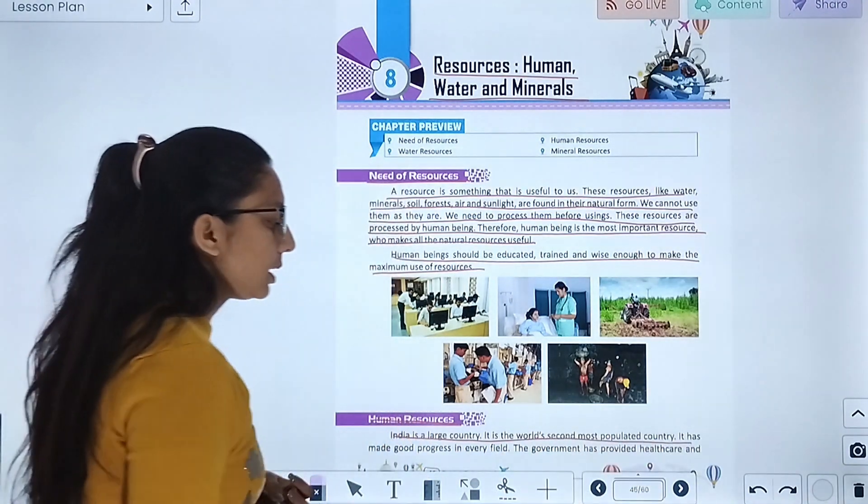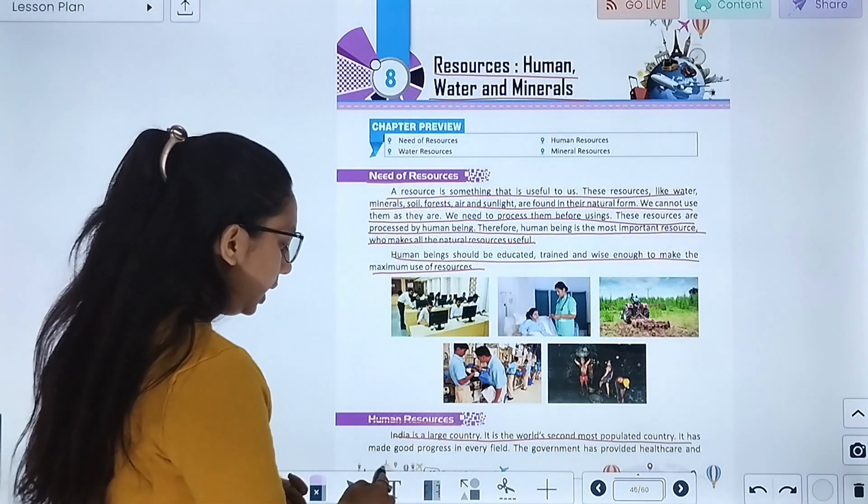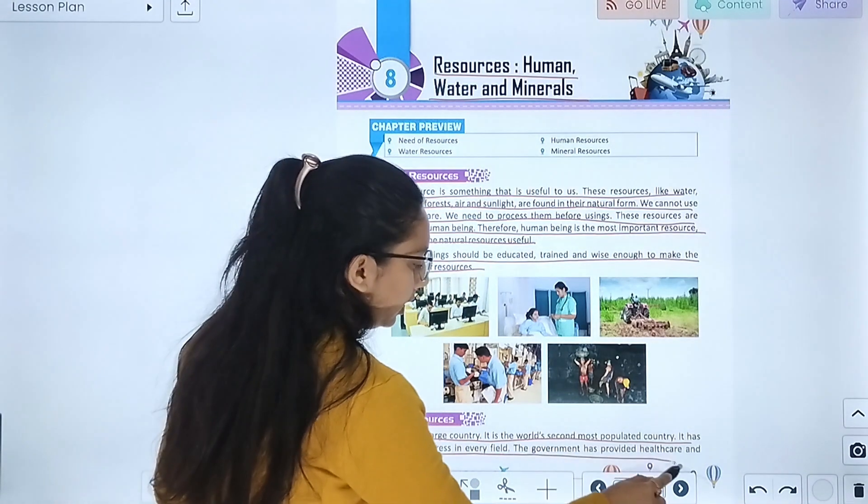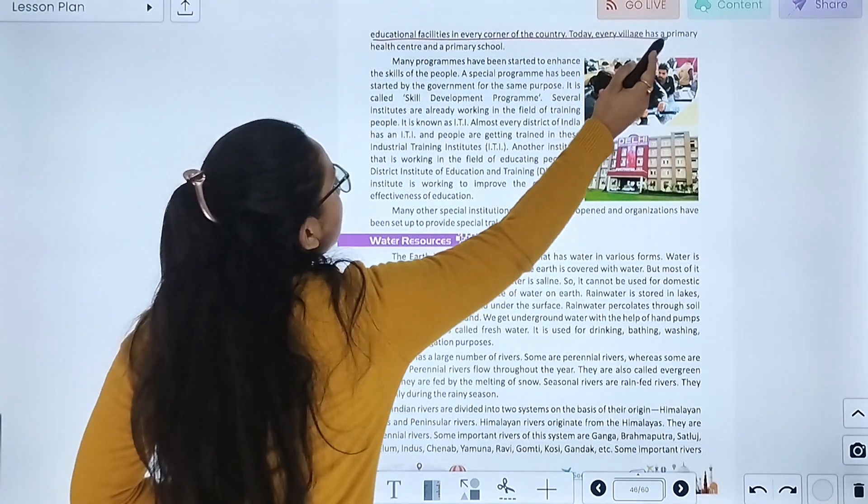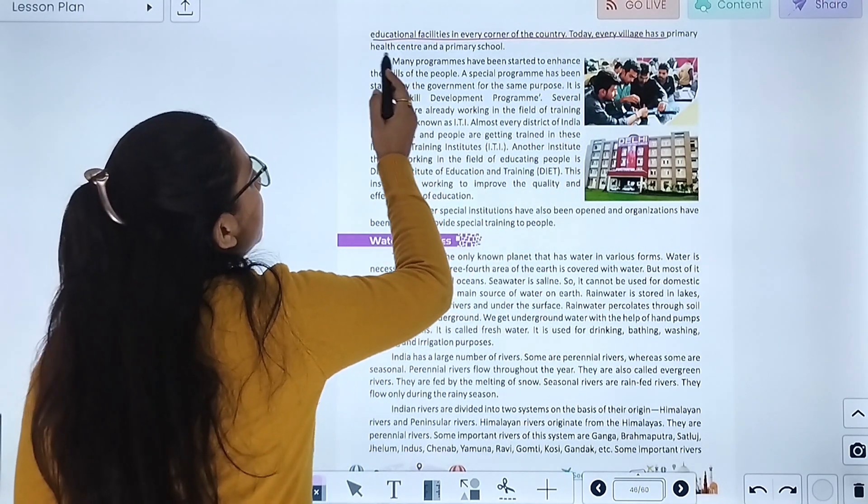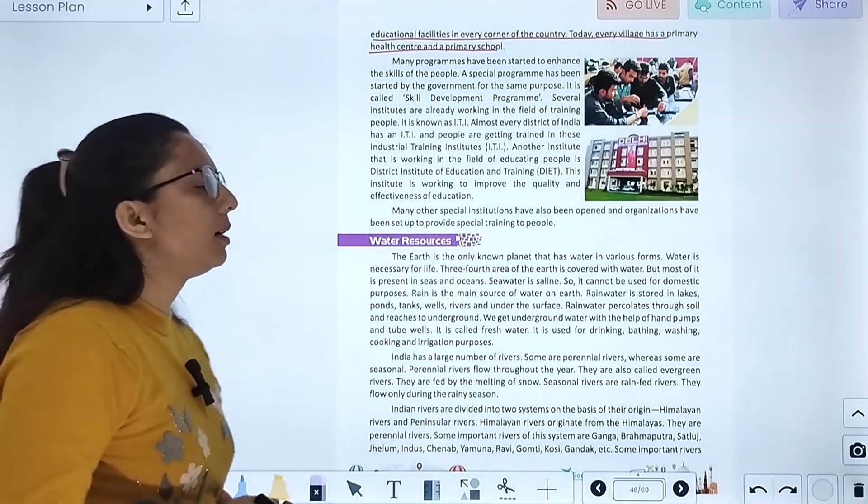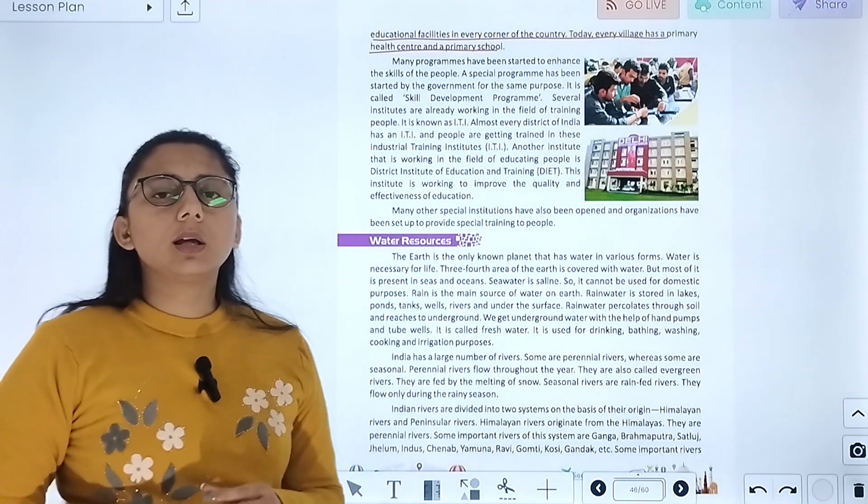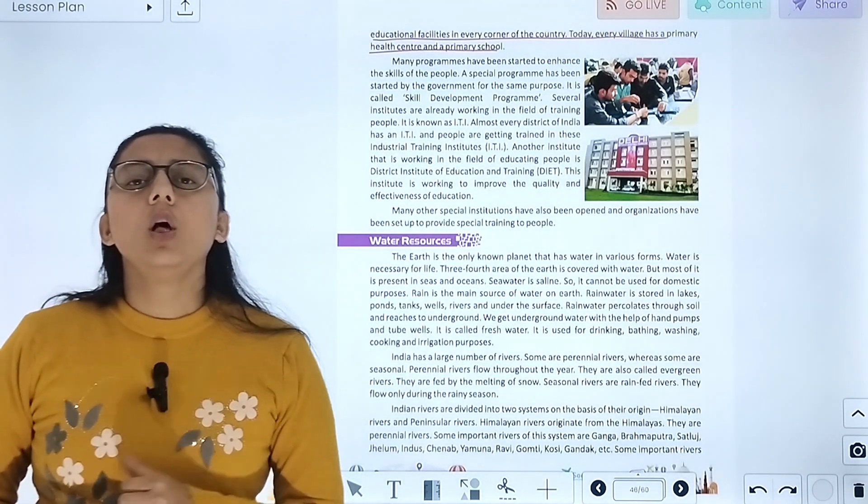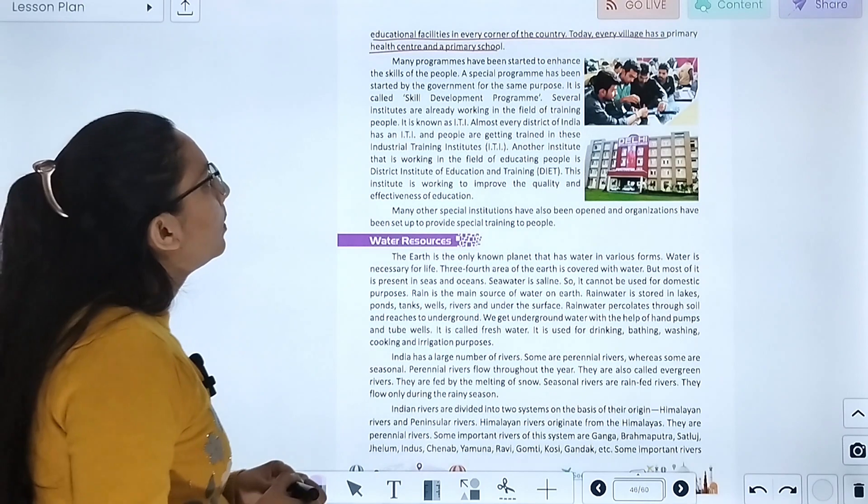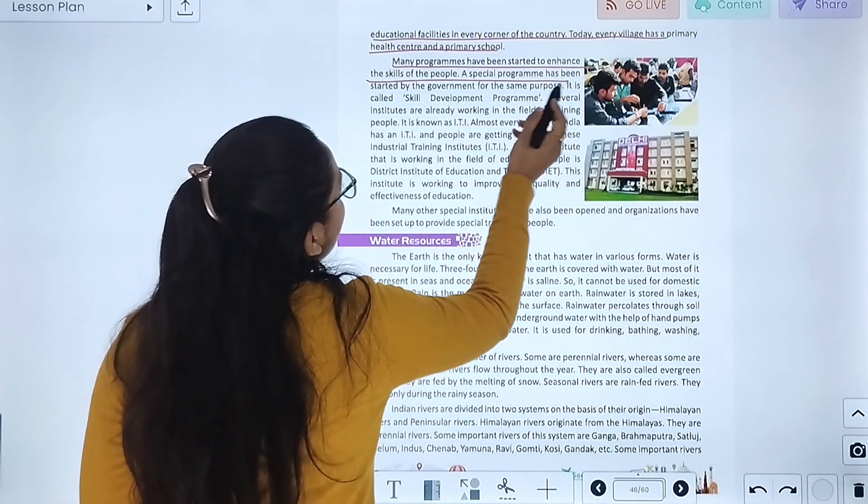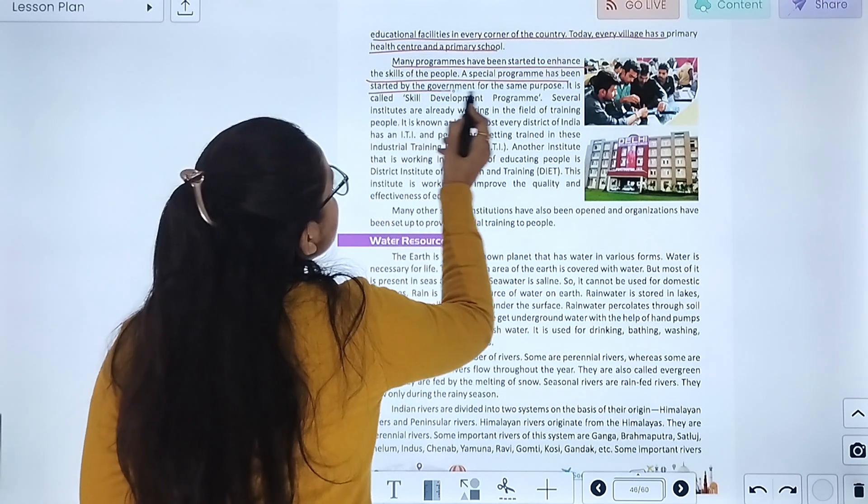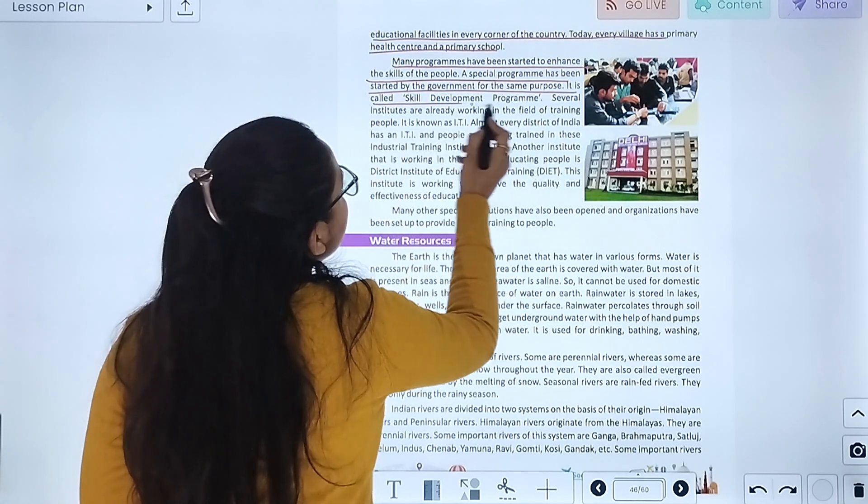India is a large country. It is the world's second most populated country. It has made good progress in every field. The government has provided healthcare and educational facilities in every corner of the country. Today, every village has primary health centers and primary schools. Many programs have been started to enhance the skills of people.